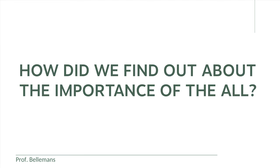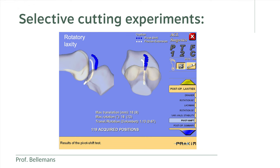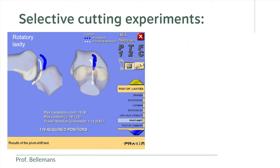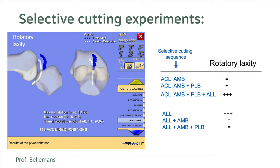So how did we find out that the anterolateral ligament is so important in controlling rotational stability of the knee? That was done through what we call selective cutting experiments. In such experiments, fresh cadaver knee specimens are used to measure very precisely the changes in stability or laxity while executing step-by-step transections of certain ligaments in very specific sequences. What we found was that the anterolateral ligament is indeed even more important than the posterolateral ACL bundle in protecting rotational stability.